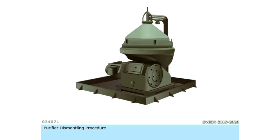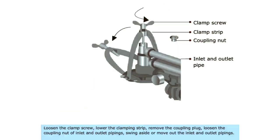Purifier Dismantling Procedure. Loosen the clamp screw, lower the clamping strip, remove the coupling plug, loosen the coupling nut of inlet and outlet pipings, swing aside or move out the inlet and outlet pipings.